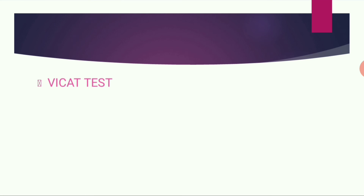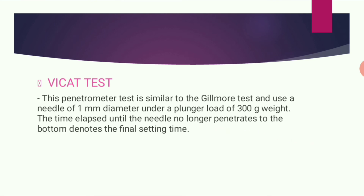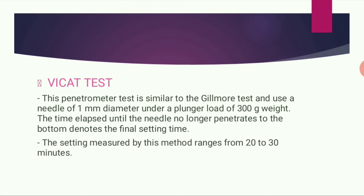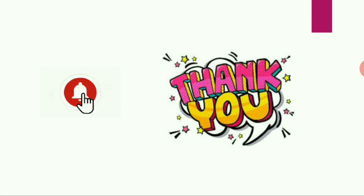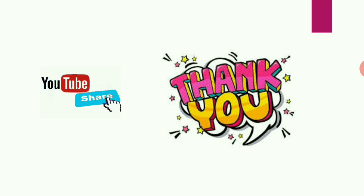The next test is the Vicat test. This penetrometer test is similar to the Gilmore test and uses a needle of 1 mm diameter under a plunger load of 300 grams. The time elapsed until the needle no longer penetrates to the bottom denotes the final setting time. The setting time measured by this method ranges from 20 to 30 minutes.